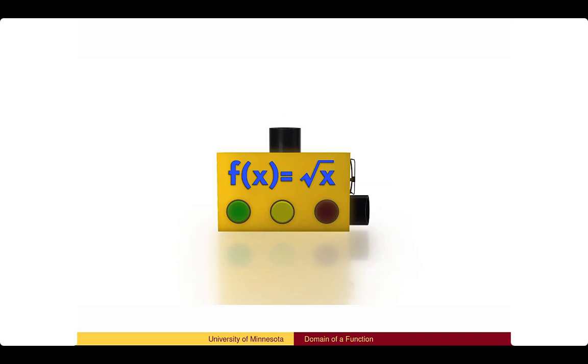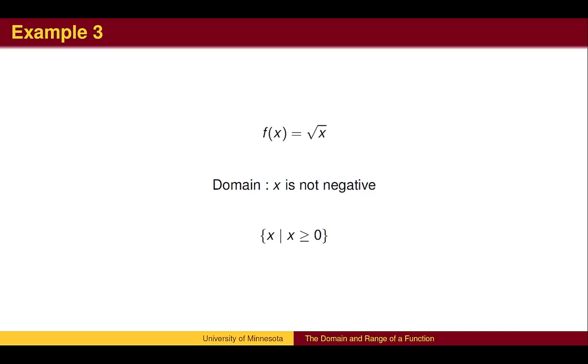Another common example is the square root function. We cannot plug negative numbers into the square root function. Formally, we say that the domain is all real numbers greater than or equal to 0.